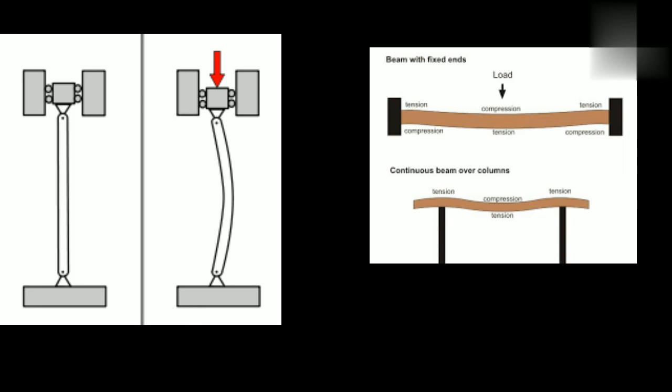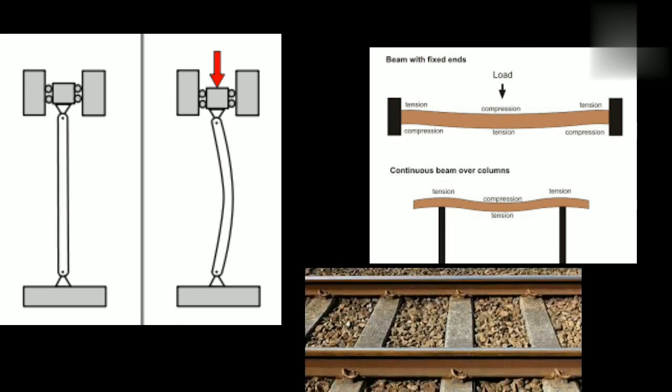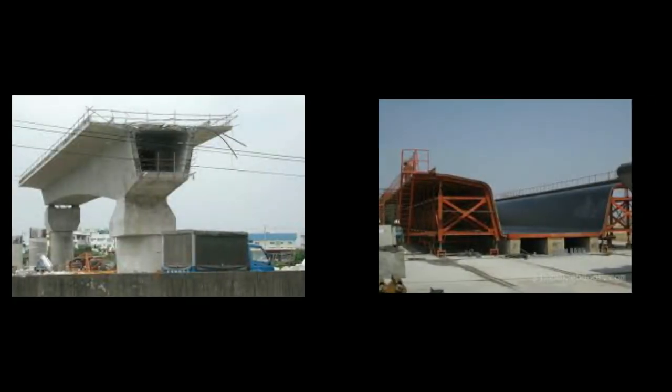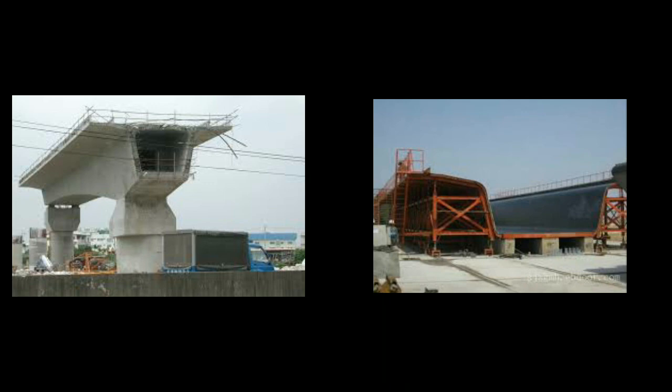In an I-section, the top and bottom horizontal elements are called flanges, and the vertical element is called the web. This combination makes the section very strong for bridge use. The rail in a railway track is also an I-section, which resists heavy loads. In box girders, there are two flanges at the top and bottom with two webs, and the wider flanges make box girders stronger than I-girders.